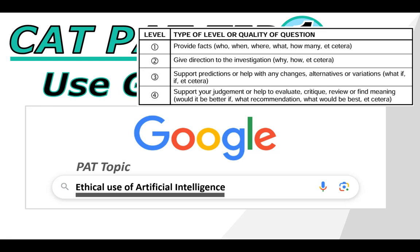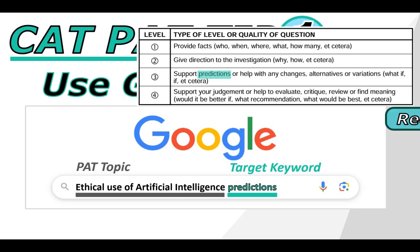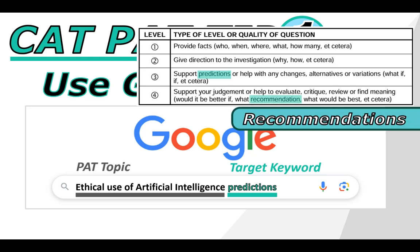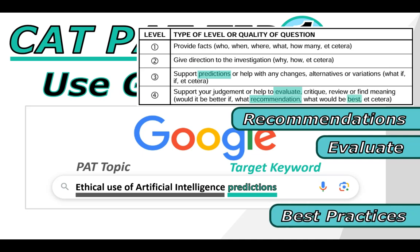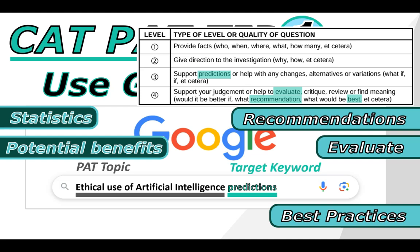For example, indicating that we want to find the ethical use of artificial intelligence, but focusing on a particular target keyword like predictions — this relates to a level three type question, so we are more likely to find information that can be answered by a level three question. Other keywords you can use are recommendations, evaluate, or best practices. These are going to help you get your level three and four information. Other words you can also include are SIST 6, which will be particularly useful for your phase two spreadsheet, as well as words like potential benefits or concerns.